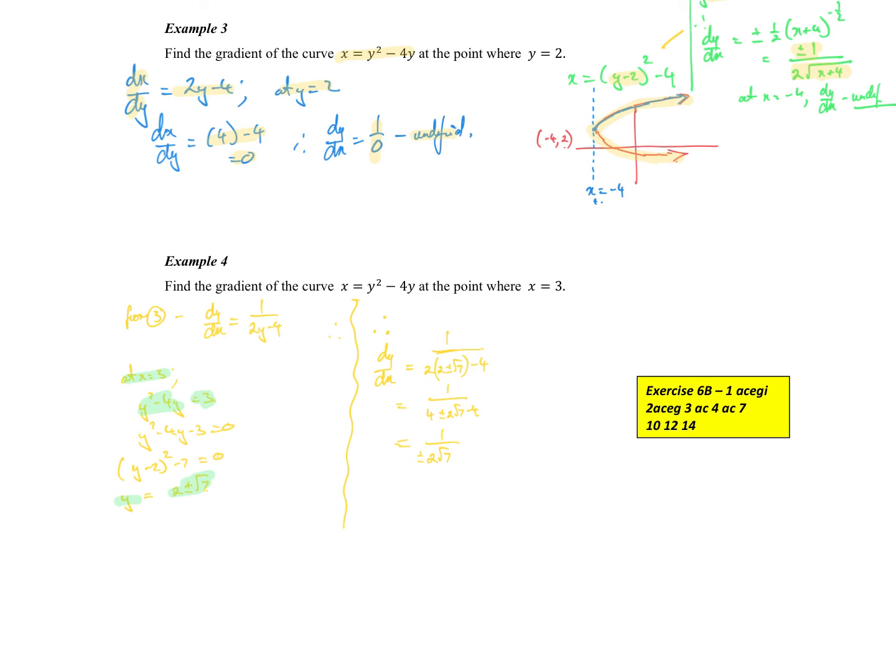So that's the point that I'm interested in. So dy/dx is 1 over 2y minus 4. So I substitute that y value in. 2 by 2 is 4. I get plus or minus 2 root 7 minus 4. 4's cancel. So I get plus or minus 1 over 2 root 7 is the gradient at that point. So that's just really keeping track of what variable we're working with. Whether you're working with dy/dx or dx/dy and then reciprocating it. Those sorts of things. Right.